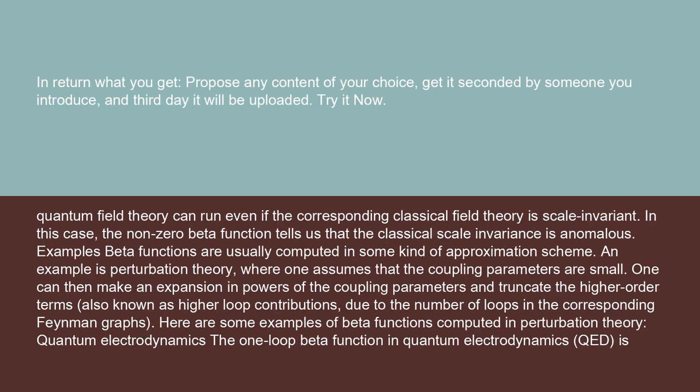The coupling parameters of a quantum field theory can run even if the corresponding classical field theory is scale invariant. In this case, the non-zero beta function tells us that the classical scale invariance is anomalous.